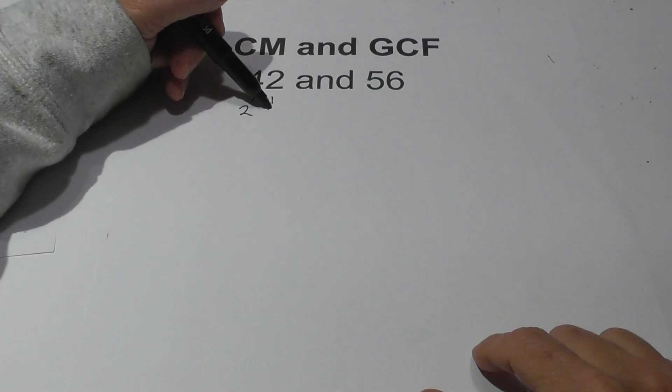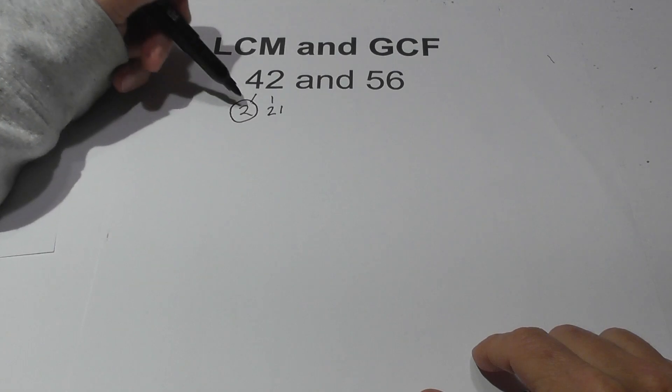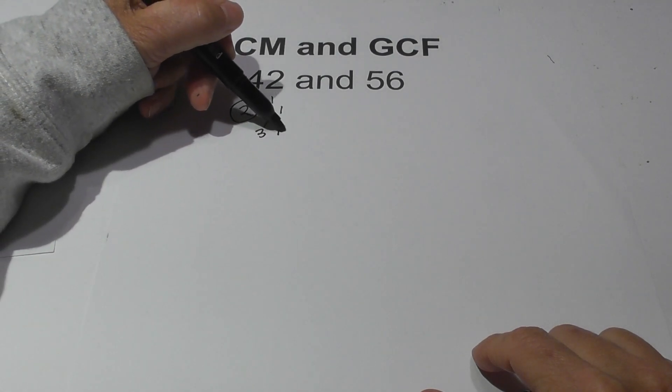I can go 2 times 21, circle the 2 because it is prime, and then 3 times 7, and they're both prime.